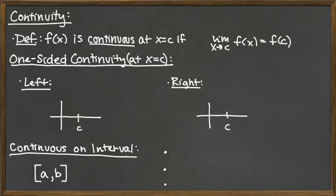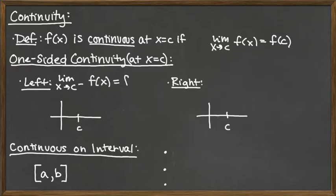We can expand this definition of continuity to one-sided continuity in the natural way. For left continuity, it would be the limit as x approaches c from the left — with the little minus sign — of f of x equal to the function value. Similarly, for right continuity, it would be the limit as x approaches c from the right of f of x equal to the function value f of c.